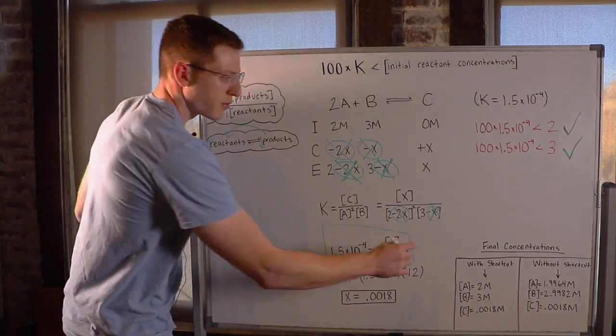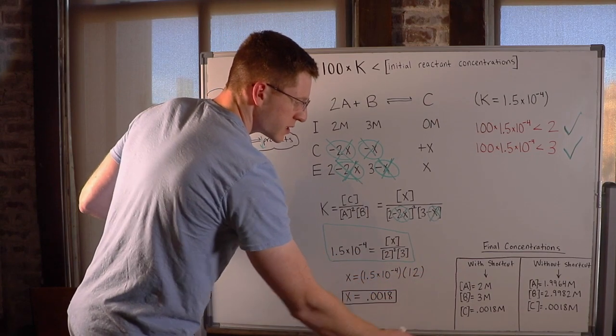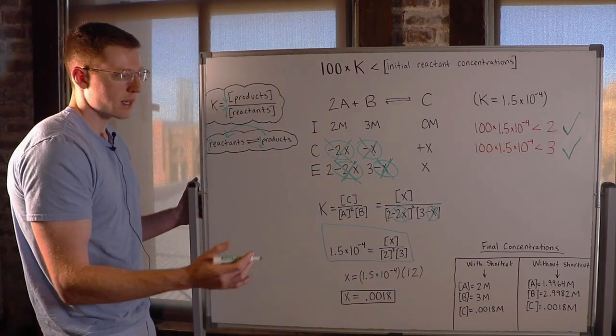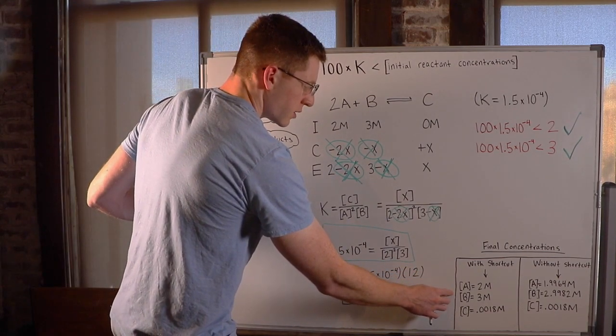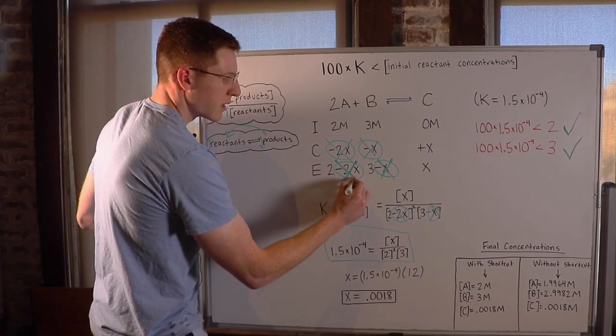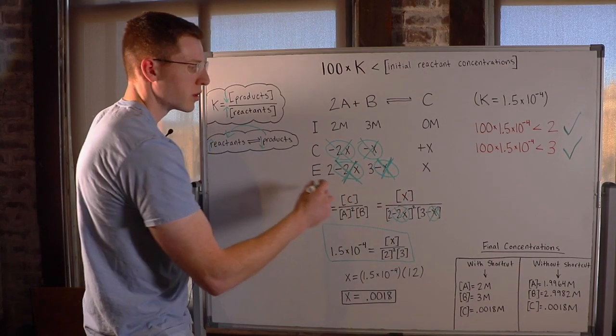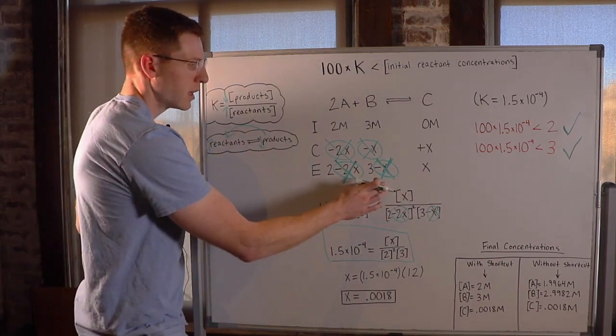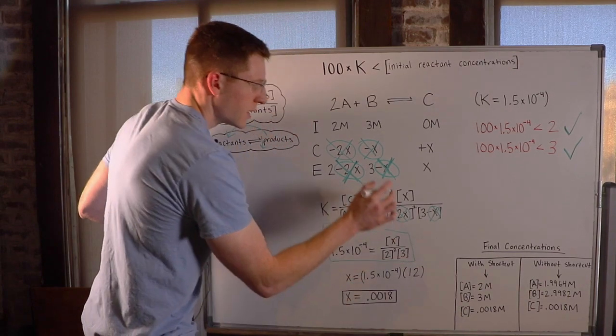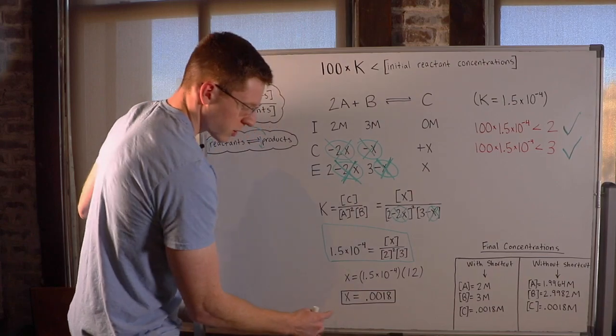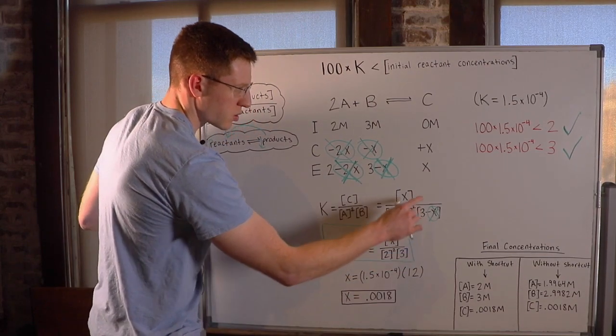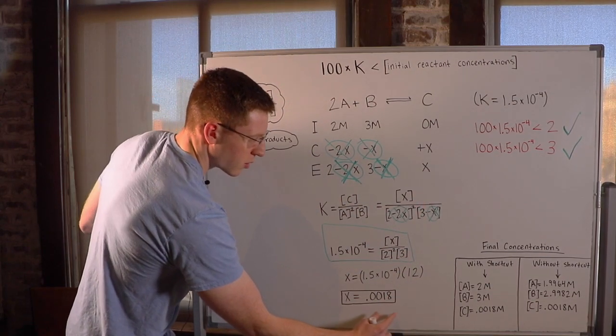So let's look at what the final concentrations of our chemical species would be using the shortcut and without using the shortcut. So when we do use the shortcut, you can see that this minus 2X and this minus X are no longer relevant. They don't apply. So our equilibrium concentrations of A and B are going to stay at 2 and 3 molar respectively. And of course we obtained our equilibrium concentration of C to be 0.0018 molar.